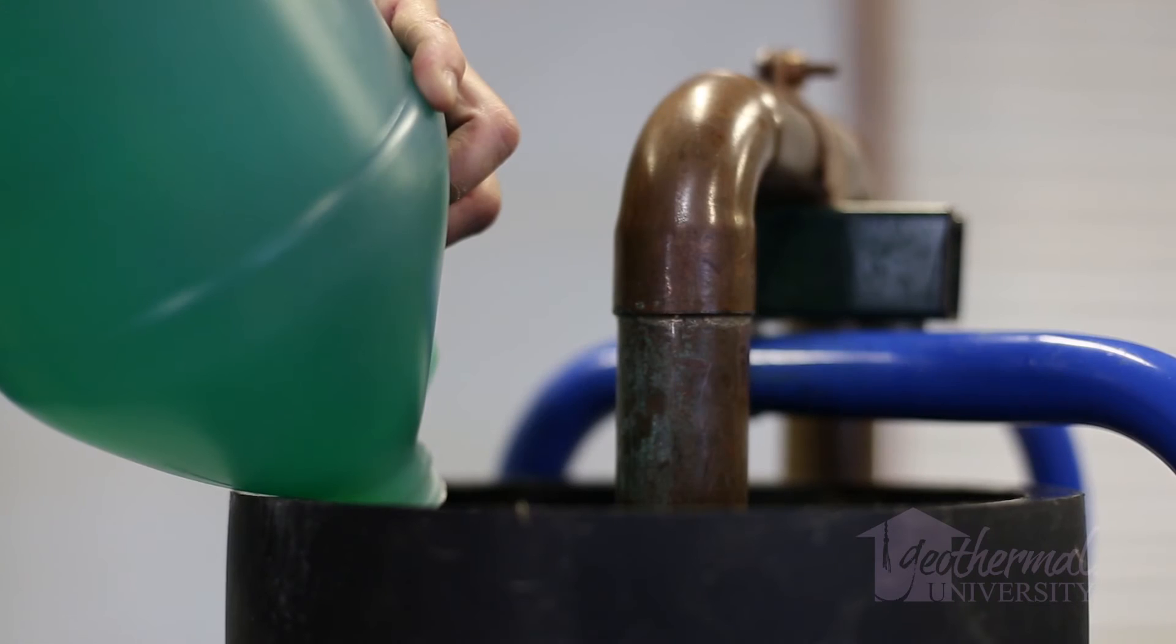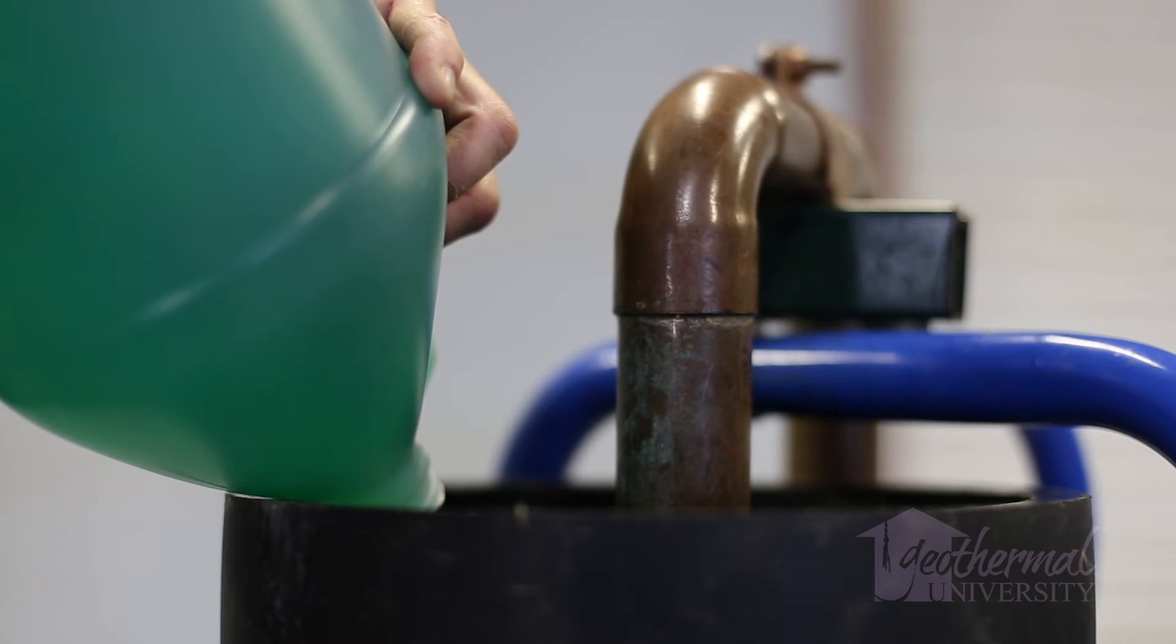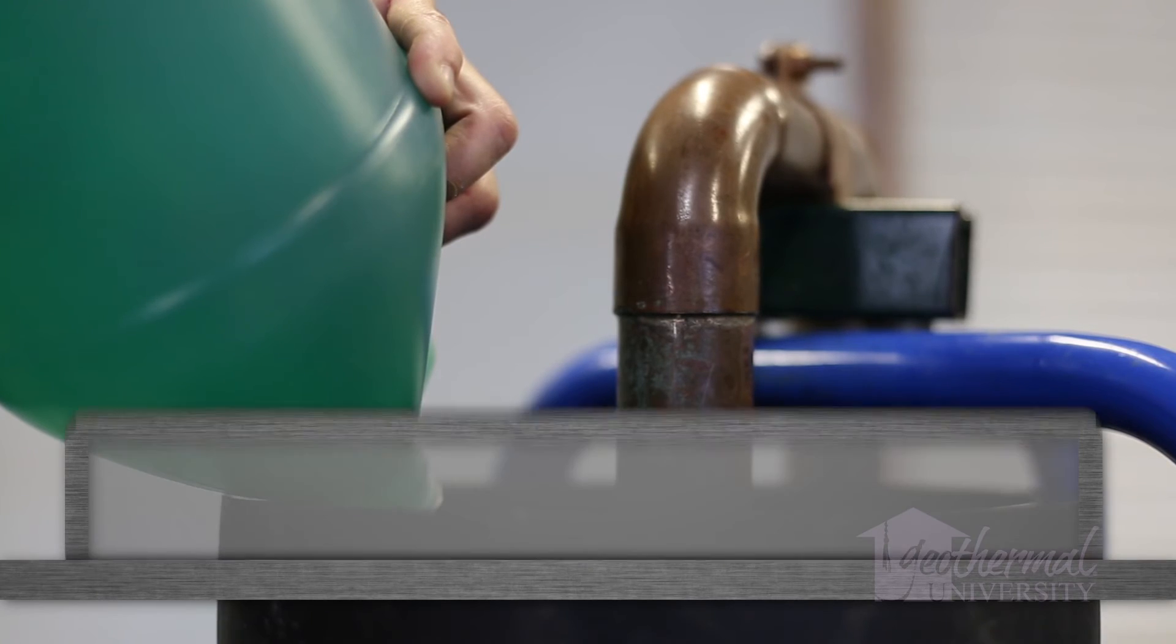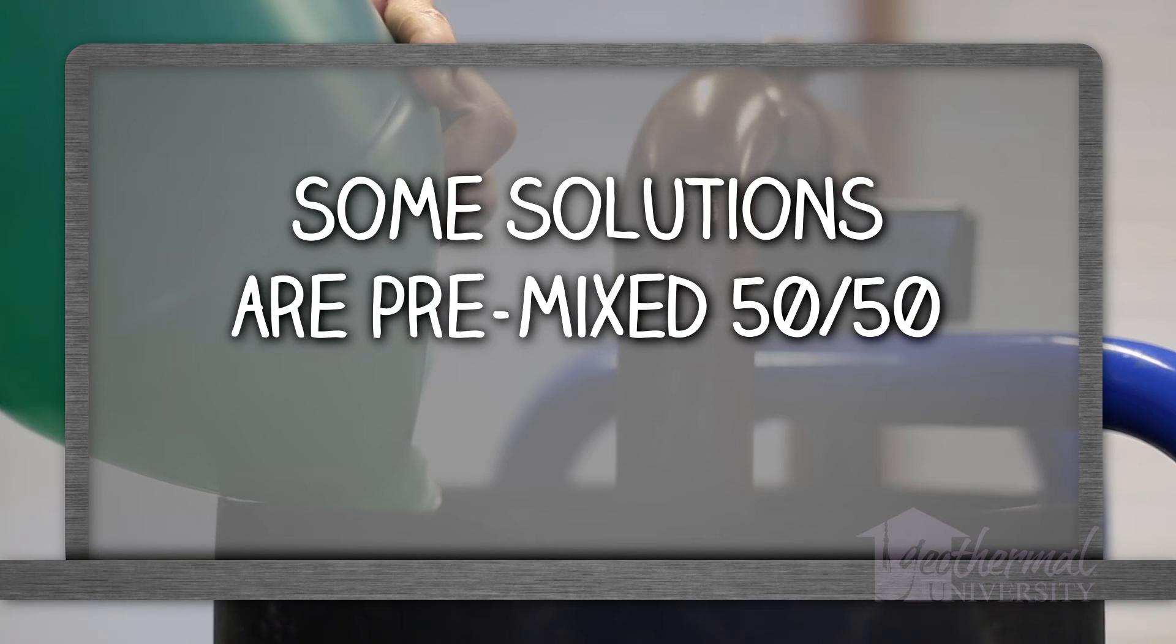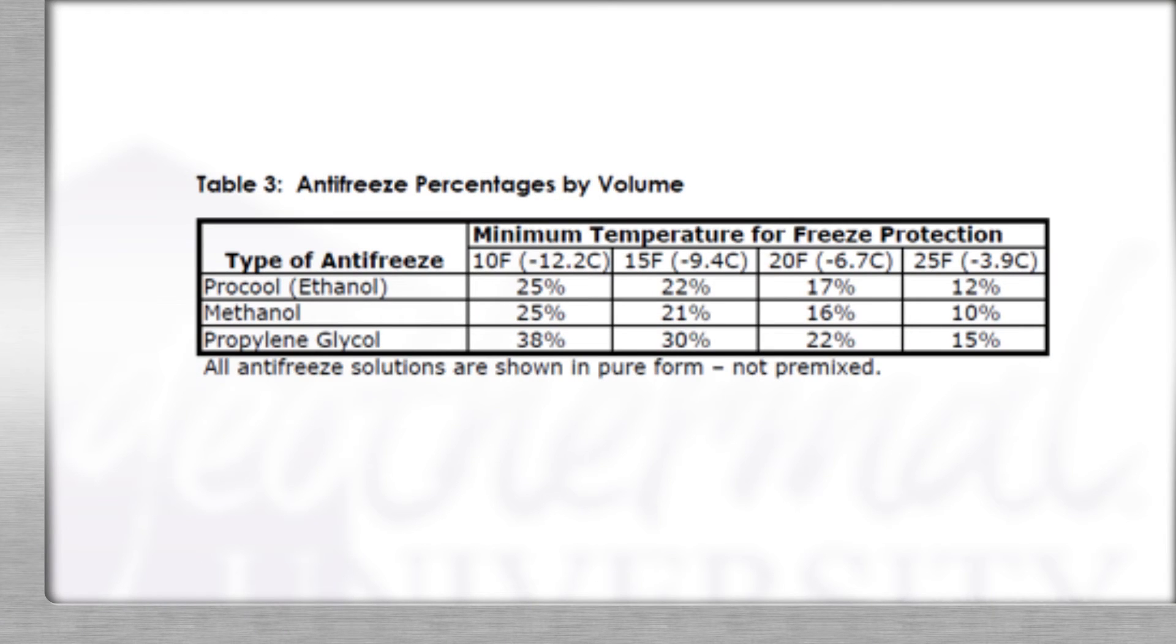Important! This calculation assumes you are using 100% non-diluted propylene glycol. Some antifreeze solutions are already mixed at 50-50. For other antifreeze requirements by volume, see Table 3, page 18 in our Flow Center and Loop Application Installation Guide provided with this video.